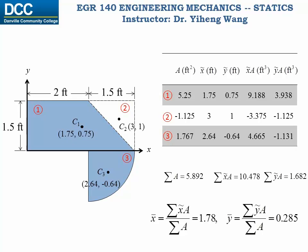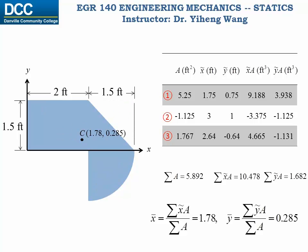We put the information into this table. Note this time, component 2 has a negative value for its area. So adding area 2 is essentially the same as subtracting the area of this triangle. Through calculation, we will get exactly the same location for the centroid of the composite area.